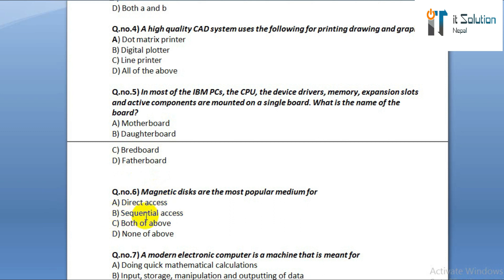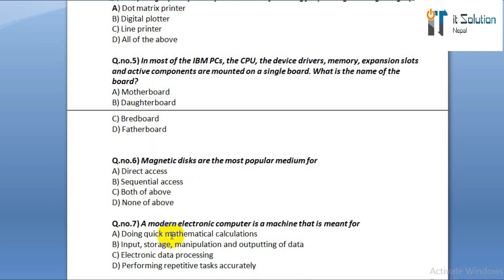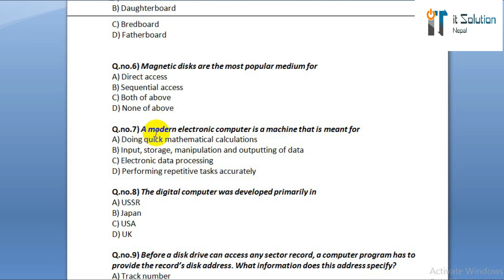Question number six: magnetic discs are the most popular medium for option A: direct access. Option B: sequential access. Option C: both of above. Option D: none of above. Question number seven: a modern electronic computer is a machine meant for option A: doing quick mathematical calculations. Option B: input, storage, manipulation, and outputting of data.